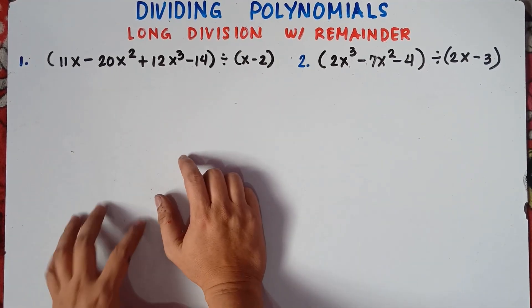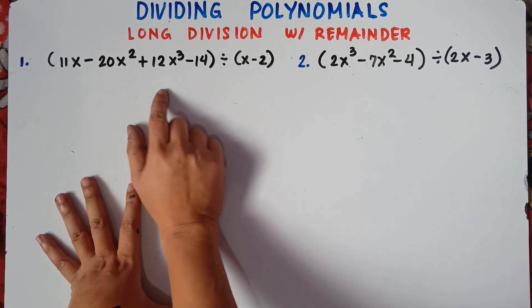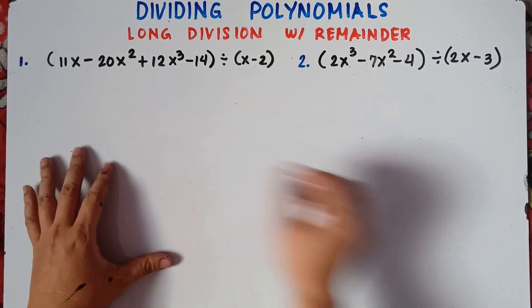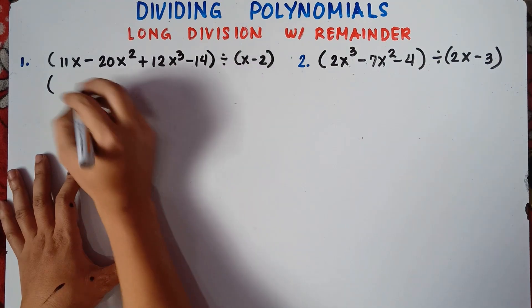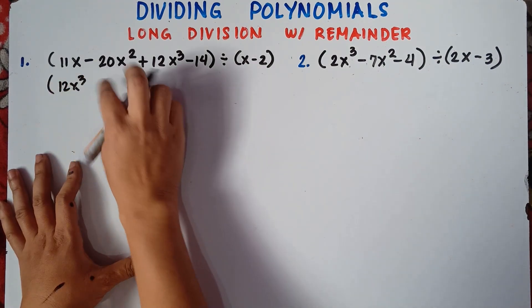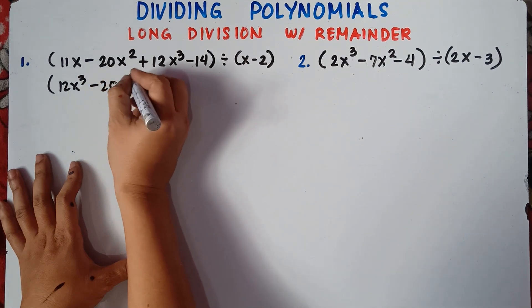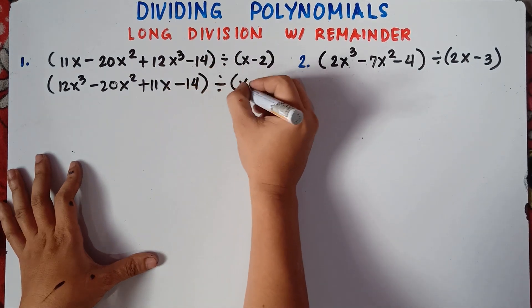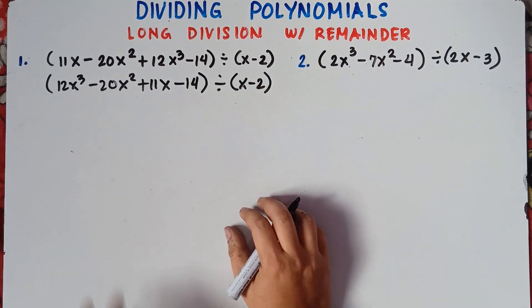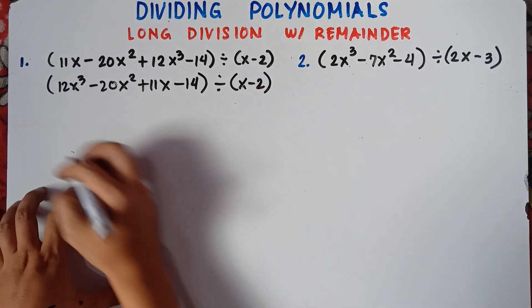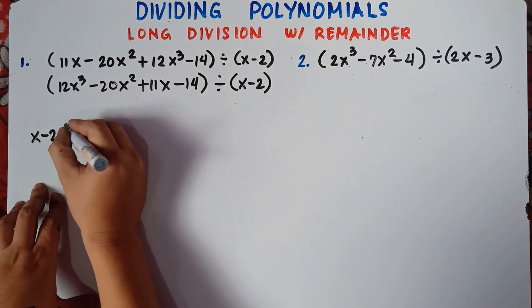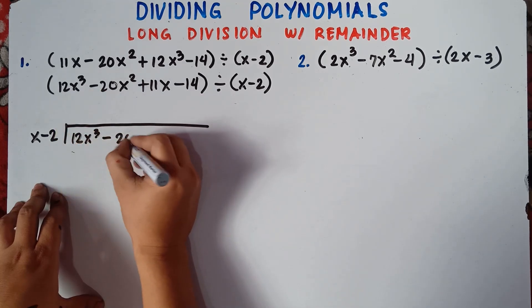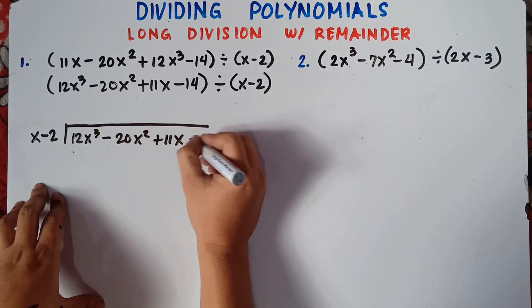So number 1 — check first if the degree has already been arranged. For number 1, we have x, x squared, x cubed, so the exponent or the degree is not arranged. We need to arrange this one. x cubed comes first: 12x cubed, then negative 20x squared, then positive 11x, minus 14. Then we divide this one, using x minus 2.